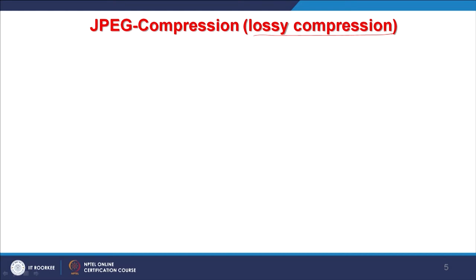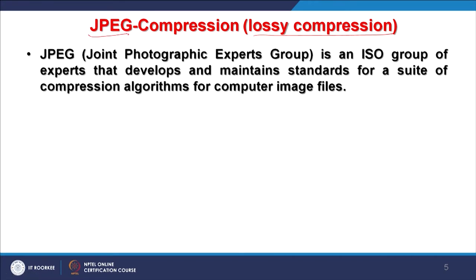A very famous file format is JPEG - Joint Photographic Expert Group - which is an ISO group of experts that develops and maintains standards for a suite of compression algorithms for computer image files, with the latest version being JPEG 2000. JPEG provides very high compression compared to other compression techniques discussed. However, it is a lossy or destructive compression - it will really reduce the quality of your image.